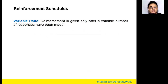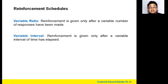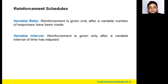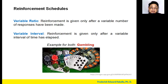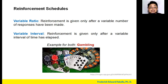Variable ratio reinforcement is given only after a variable number of responses, and variable interval is given only after a variable interval of time has elapsed. A single example covers both: gambling. You don't know how many times you have to bet before you win, and you don't know how much time you must spend gambling before winning. That's why experts say gambling is very addictive — you never know when you'll hit the jackpot.